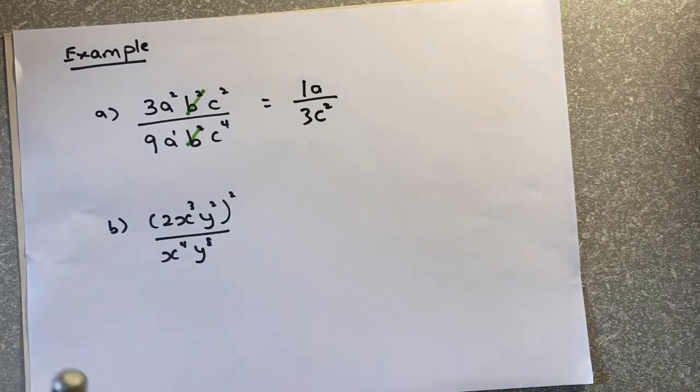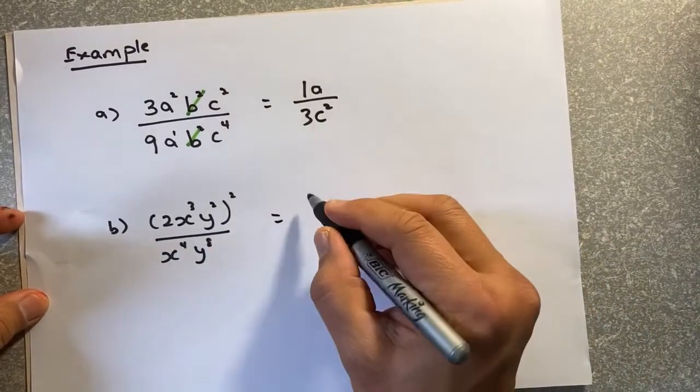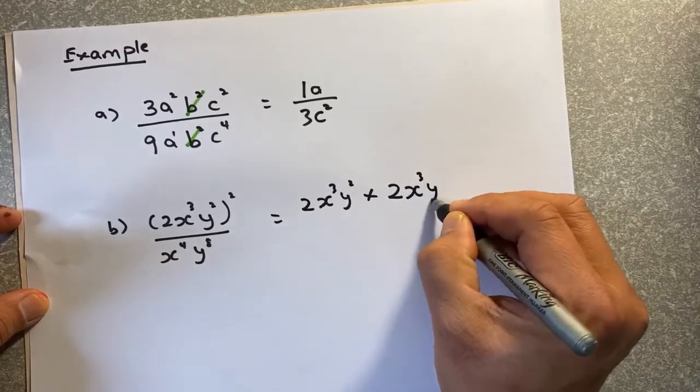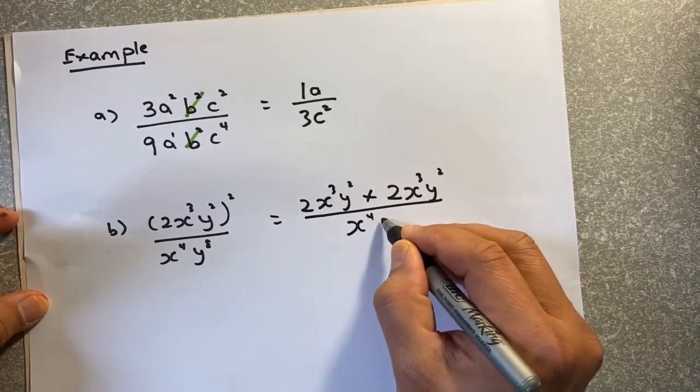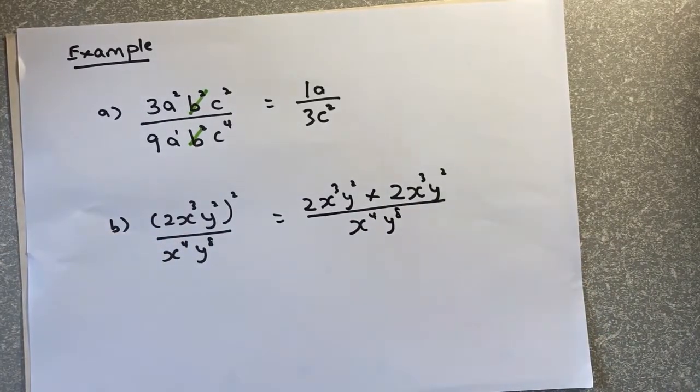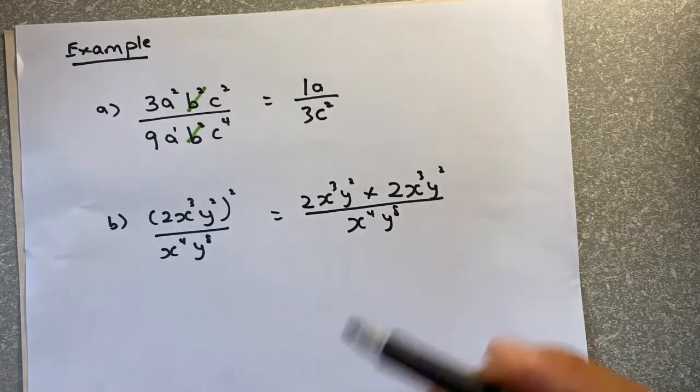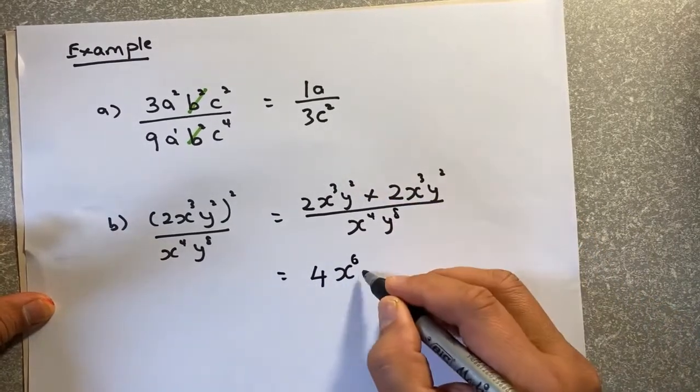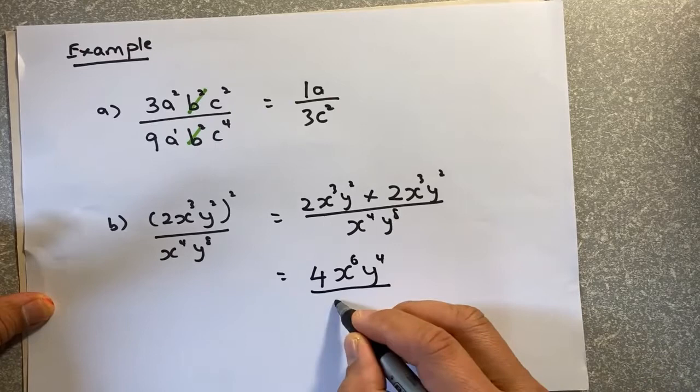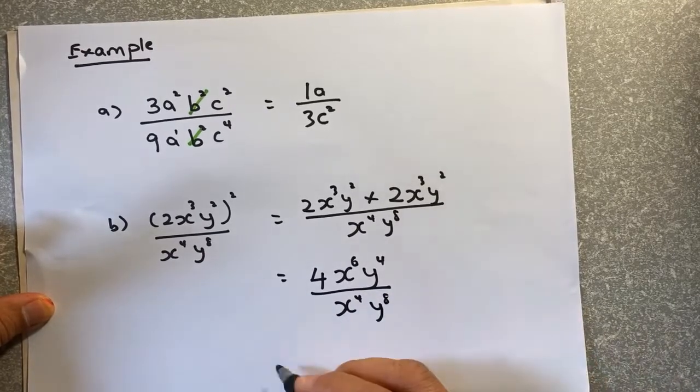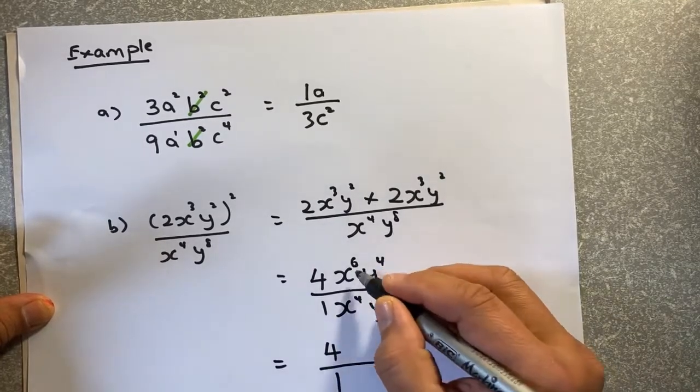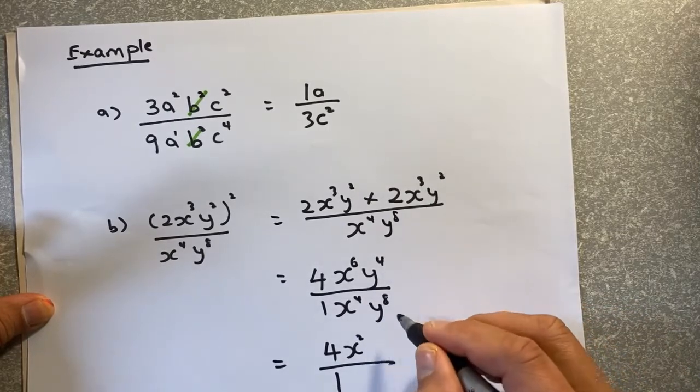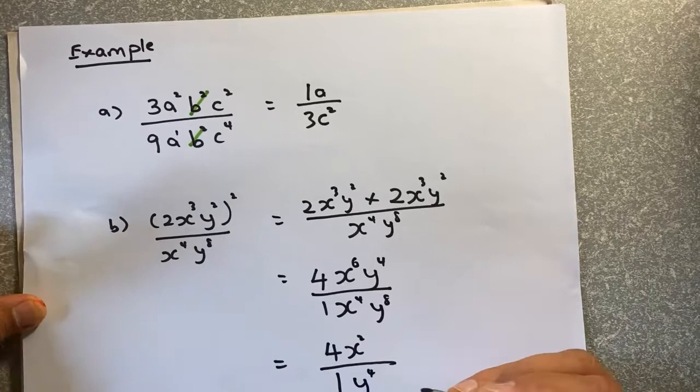The last one is going to be interesting. This is closer to O level. So this means 2x cubed y squared times 2x cubed y squared, because of the square there. And you divide by x4 y8. So you need to expand the top part first. 2 times 2. You multiply first. It's going to be 4. Cube and cube, it's going to be x6 because you add the power. Squared and squared, it's y4. And the bottom is going to be x4 y8. And now you simplify. 4 over 1 still remains as 4 over 1. 6 minus 4 is 2. And 4 minus 8 is minus 4, because the denominator is higher at the bottom. So the answer is y4 at the bottom.